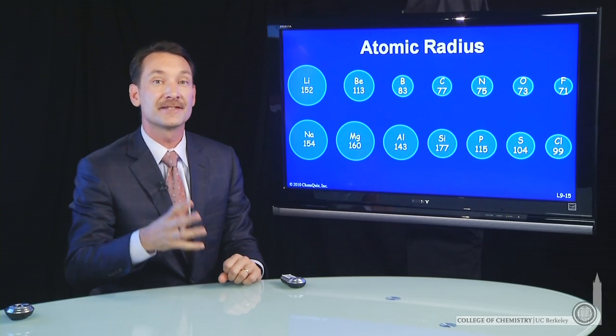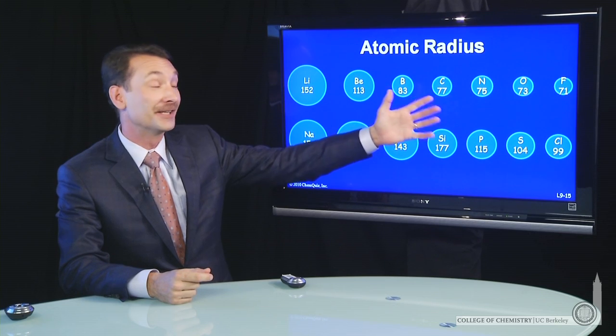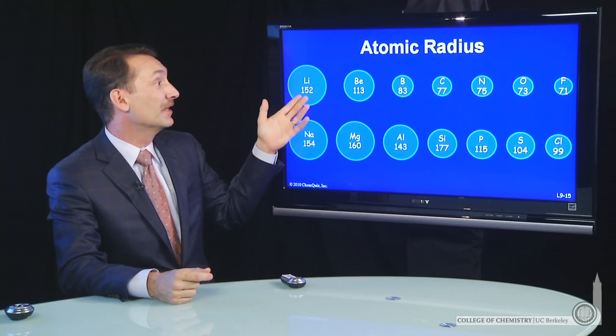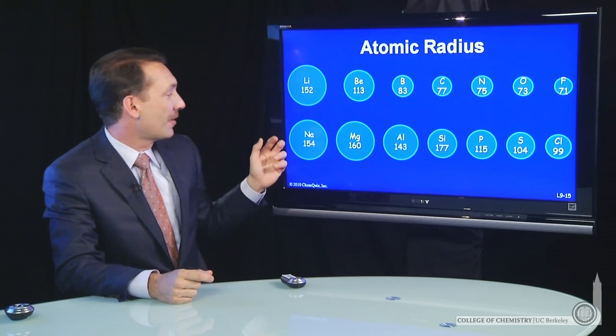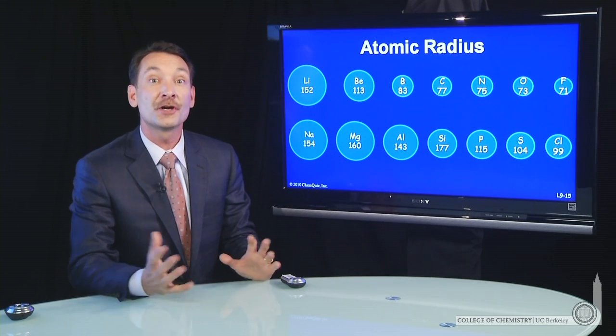Now we can look at that trend in atomic radius in a little more detail. Here I've plotted schematically the trend from lithium to fluorine and from sodium to chlorine across the periodic table. So I'm going across a row.